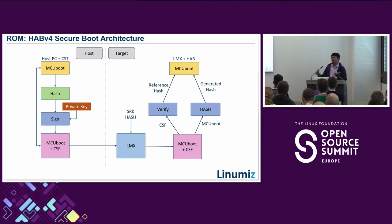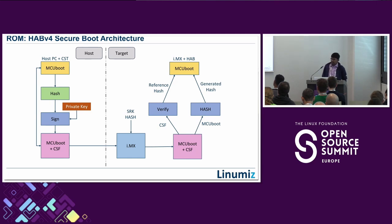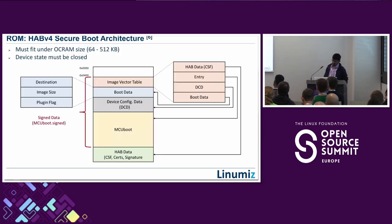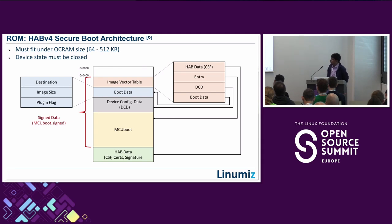Specifically for the i.MX series, there is on-chip RAM (OCRAM) accessible only by the High Assurance Boot during the boot sequence. It verifies the hash by computing MCU boot's hash and cross-checking with the CSF (Command Sequence File) data appended as part of MCU boot — that's how you verify at the ROM stage. This is in a nutshell how MCU boot looks when signed together with the code signing tool.